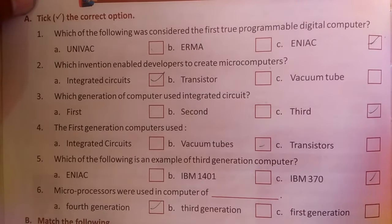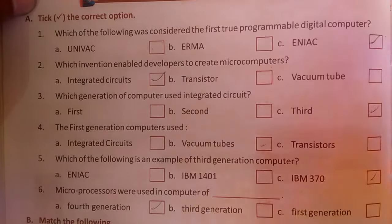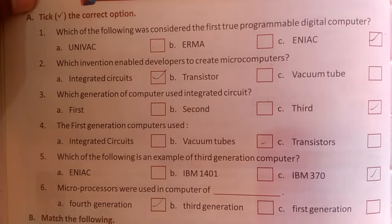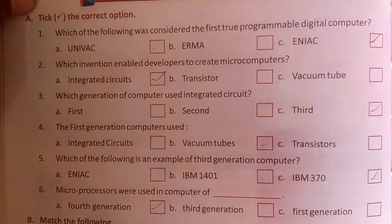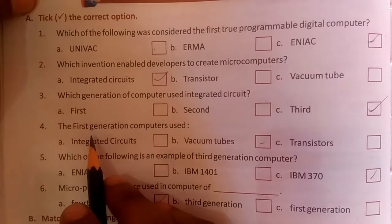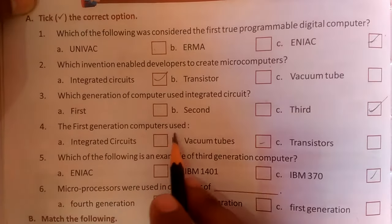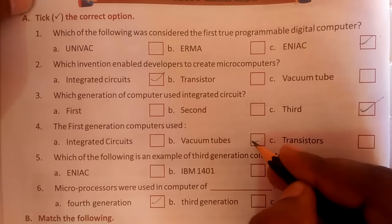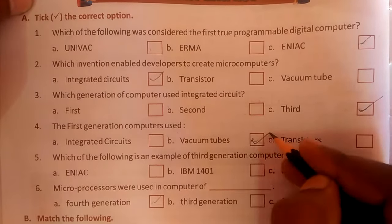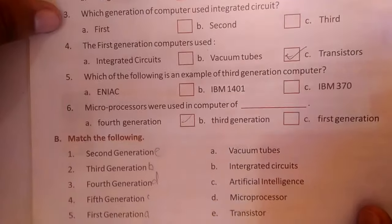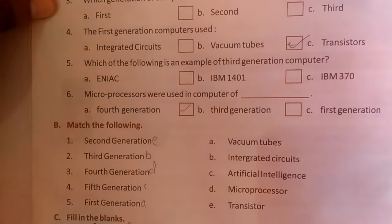Which generation of computers used integrated circuits? The first generation used vacuum tubes, the second generation used transistors, and the third generation used integrated circuits.